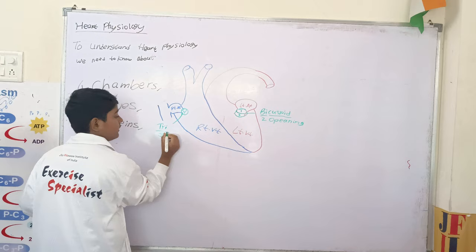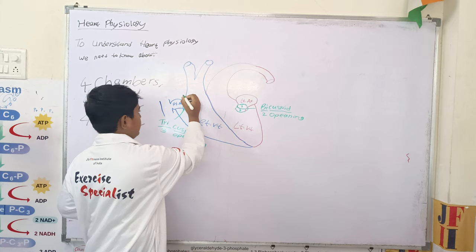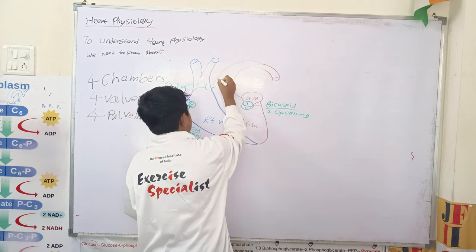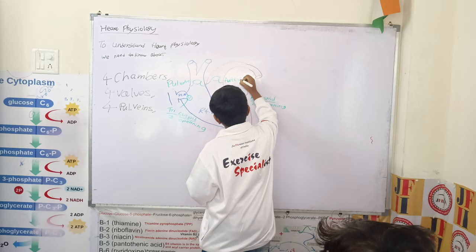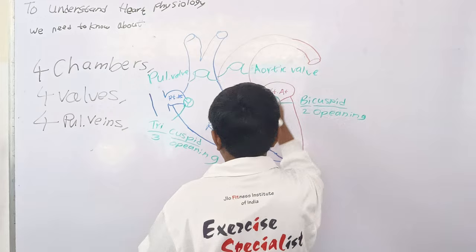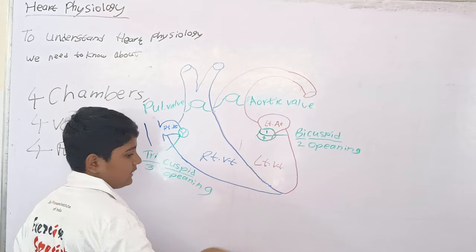The next is the pulmonary valve and the aortic valve. I will repeat: the bicuspid valve, the tricuspid valve, the pulmonary valve, and the aortic valve. The bicuspid valve is also called the mitral valve. Now we are going to learn about the four coronary veins.